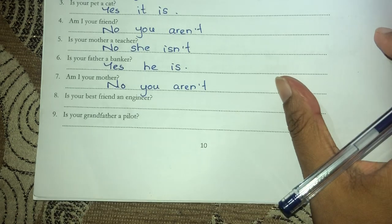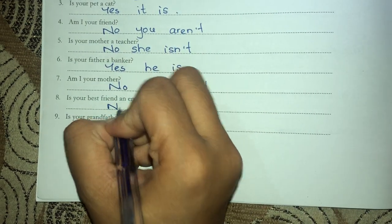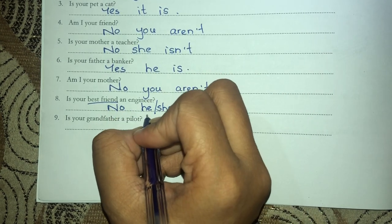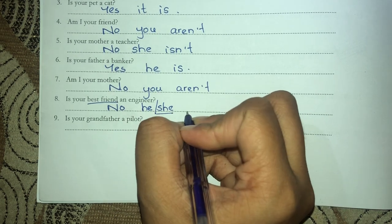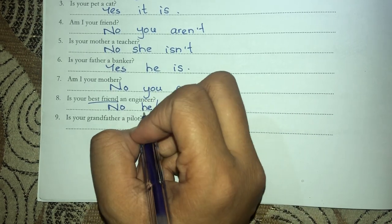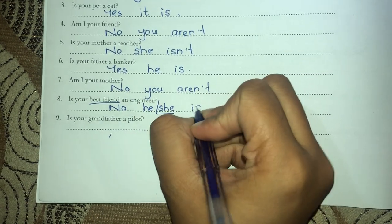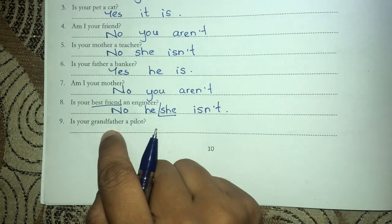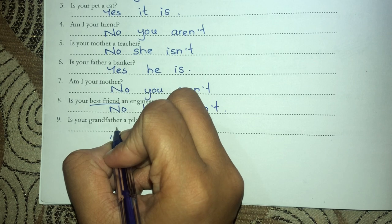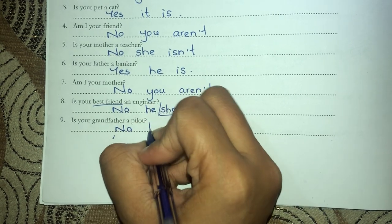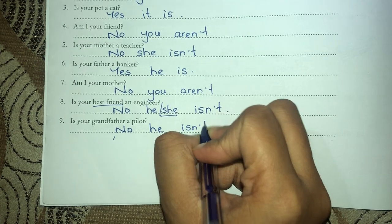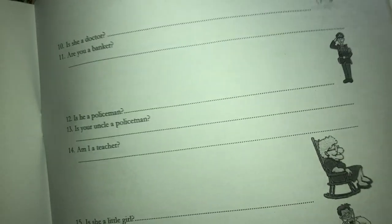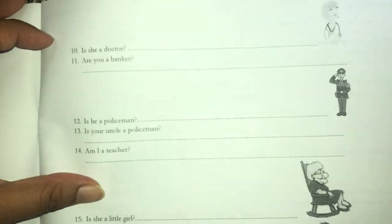'Is your best friend an engineer?' - My best friend is a girl, so 'No, she isn't.' If your best friend is a boy, write 'No, he isn't.' You might have a grandfather who was a pilot. Then we go on to the next one: 'Is she a doctor?' - looking at the pictures given, 'Yes, she is. She is a doctor.'